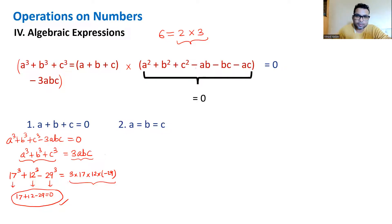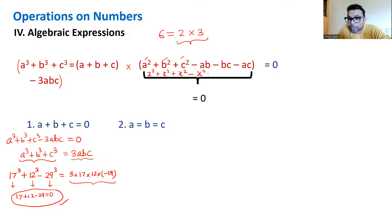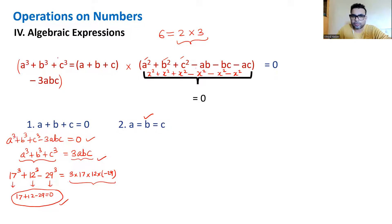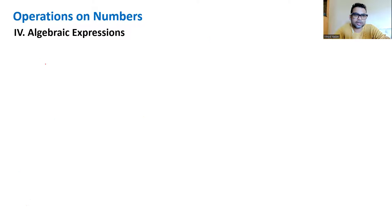The second case is when the second bracket equals zero — that happens when a = b = c, meaning all three numbers are the same. Visualize putting all of them as x: x²+x²+x² minus x·x minus x·x minus x·x equals zero. So whenever you see three cubes in an algebraic expression, always check for these two conditions first.